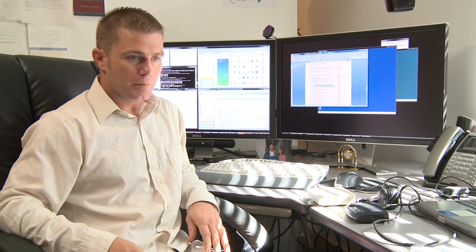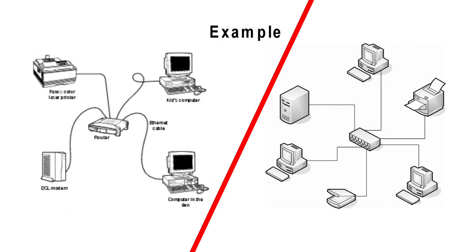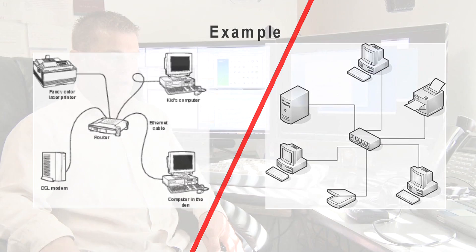The way that a hub communicates, it cycles through the network connections until it finds the computer it's looking for, and then it sends the packets back and forth at a 10-100 speed.